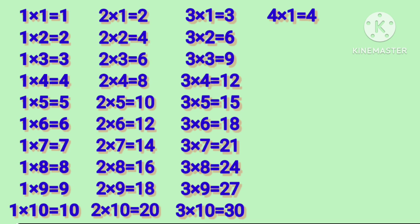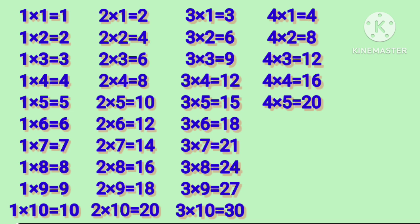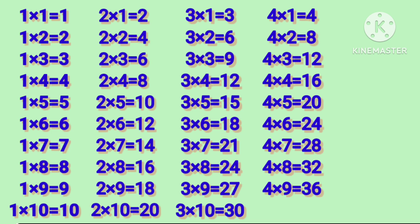4 1's are 4, 4 2's are 8, 4 3's are 12, 4 4's are 16, 4 5's are 20. 4 6's are 24, 4 7's are 28, 4 8's are 32, 4 9's are 36, 4 10's are 40.